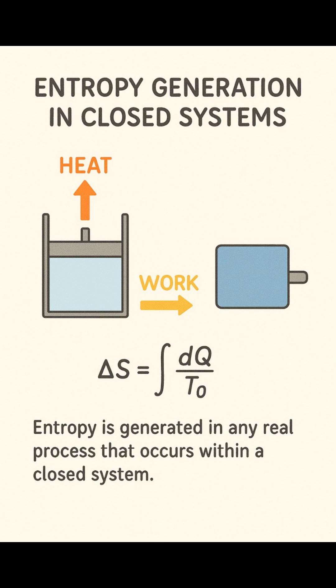In simple terms, entropy generation is a measure of how much energy becomes unavailable for doing useful work. It's the reason why real systems can never be 100% efficient.